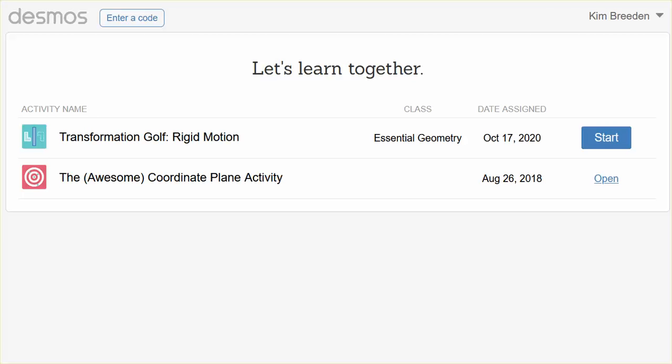You'll start by using the link in the assignment to open Desmos. You have an account created using your Minos account. So log in and it should open up our class, Essential Geometry. You might see some other assignments, but the main activity we're going to be doing right now is called Transformation Golf Rigid Motion.